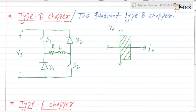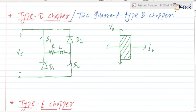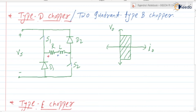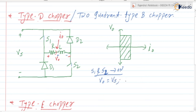Let us first discuss the operation. When switches S1 and S2 are in the on state, current will flow from Vs, S1, load, S2, and again back to Vs. At that time the inductor goes on storing the energy. V0 is equal to Vs, and I0 is positive.